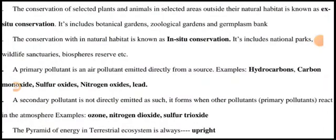The conservation of selected plants and animals outside their natural habitat is known as ex-situ conservation. It includes botanical gardens, geological gardens, and gene banks.